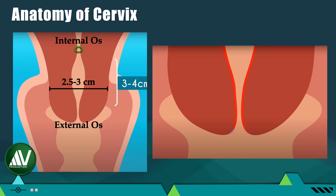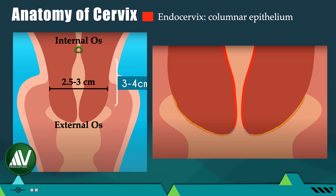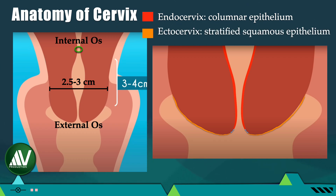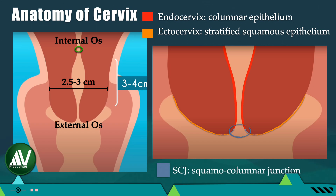The mucosal lining between the internal and external os is called the endocervix, whereas the mucosal lining of the portio vaginalis of the cervix is called the ectocervix. The endocervix is lined by columnar epithelial cells. The ectocervix is lined by non-keratinized stratified squamous epithelium, which is continuous with and the same as the epithelium lining the vagina. The junction of the columnar epithelium of the endocervix with the stratified squamous epithelium of the ectocervix is called the squamo-columnar junction, which is a dynamic region.